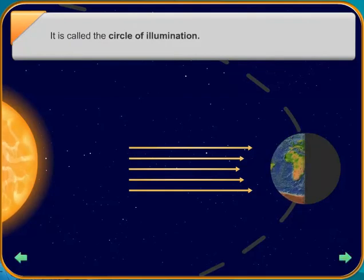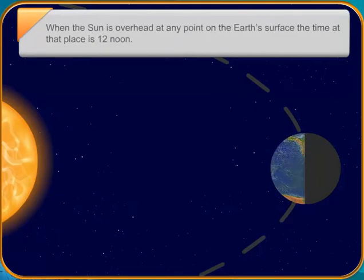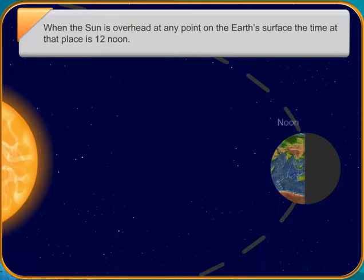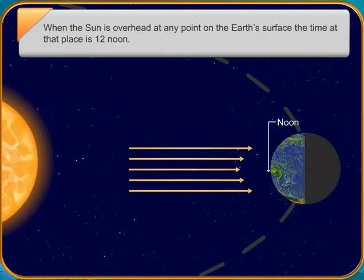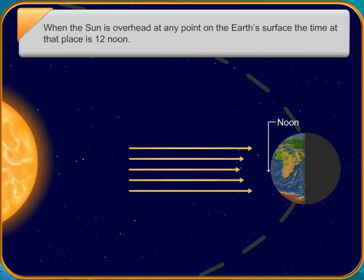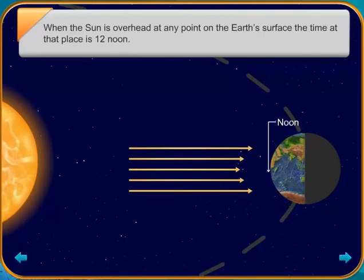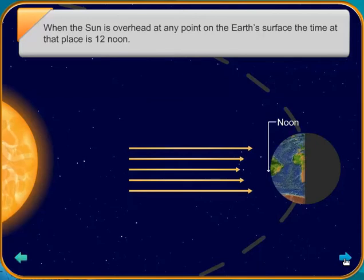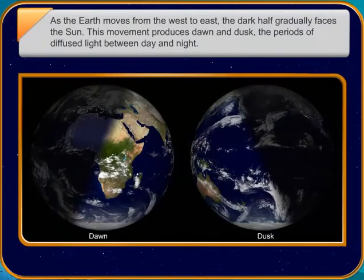When we are in a moving train, the objects outside, such as the trees and buildings, seem to be moving in the opposite direction. However, in reality, they are still, while the train moves. Similarly, the Sun's position is fixed. It is the Earth that rotates from west to east. But to us, the Sun appears to rise in the east and set in the west.